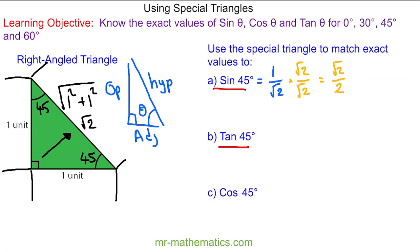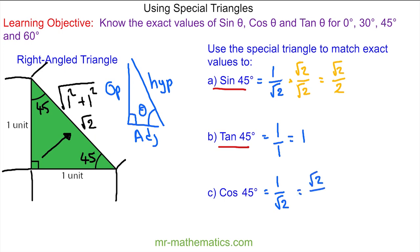For tan 45°: this is the opposite divided by the adjacent. Using this angle, the opposite is 1 and the adjacent is also 1, so tan 45° = 1/1 = 1. Finally, for cos 45°: the adjacent is 1 and the hypotenuse is √2, which rationalizes to √2/2 — the same result as sin 45°.